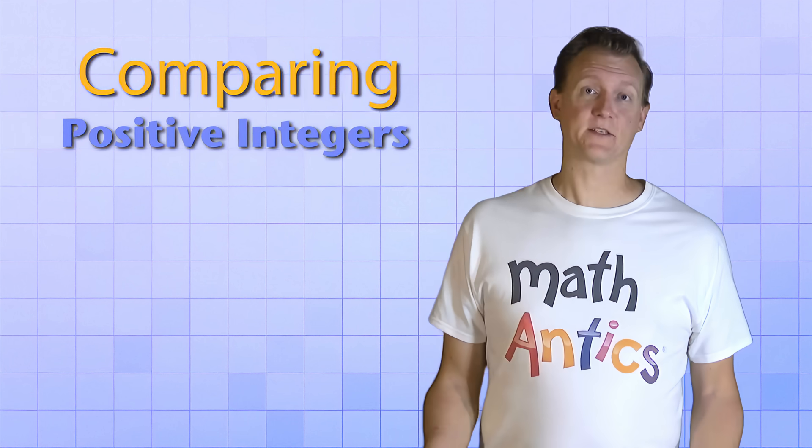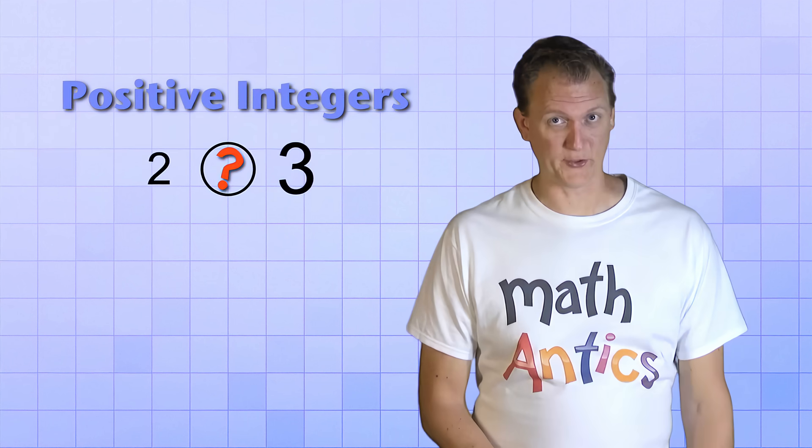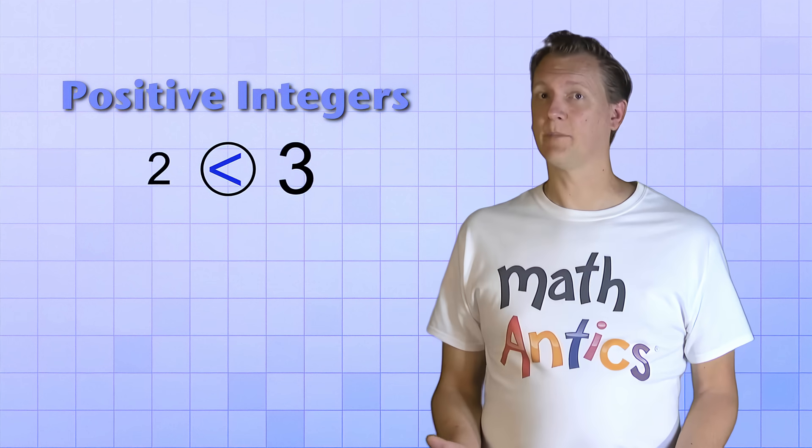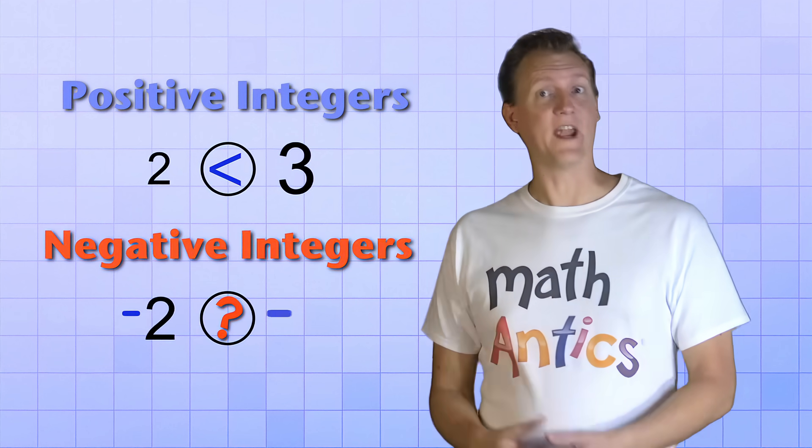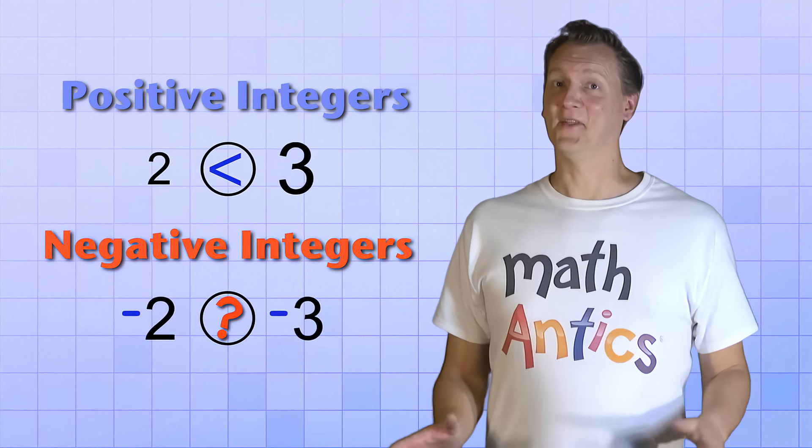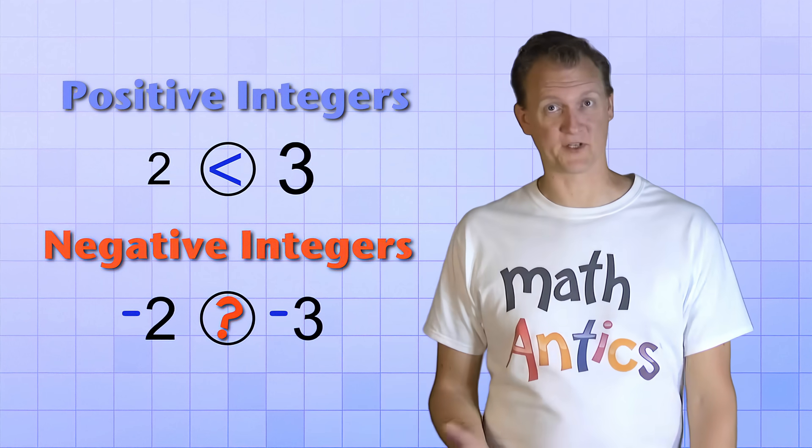You're probably already pretty good at comparing positive integers. Like if I ask, which is bigger, 2 or 3? You know that 3 is bigger than 2. But what if I ask you to compare two negative integers? Which is bigger, negative 2 or negative 3? This is where negative numbers can be a little tricky, especially if this is your first time learning about them.